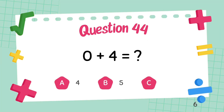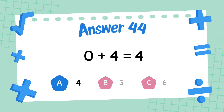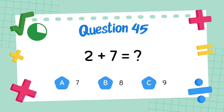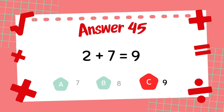What is 0 plus 4? The answer is 4. What is 2 plus 7? The answer is 9.